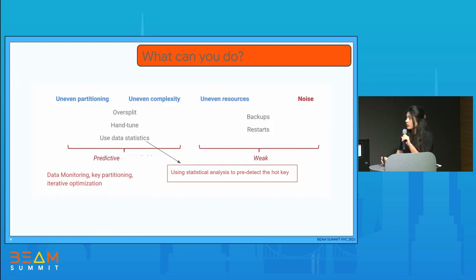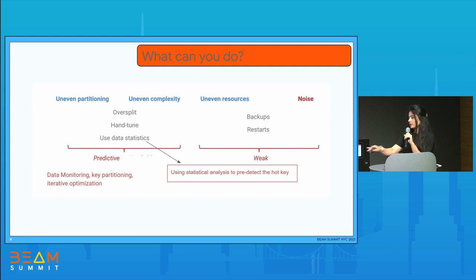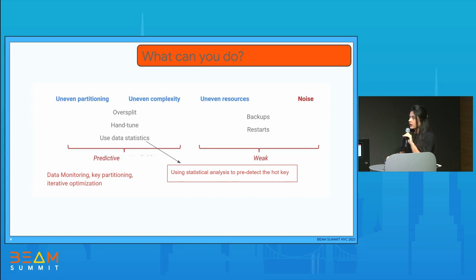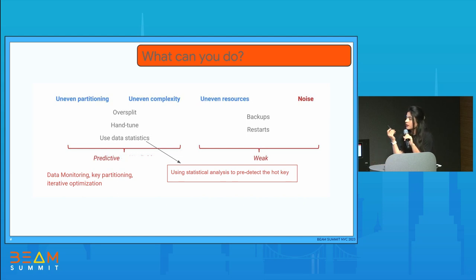There are different things you can do. The first is how to handle uneven partitioning and uneven complexity. One thing you can do is try to over-split your shards enough so there won't be a hotkey scenario. But it's a bit problematic — if you shard too much, it might introduce more complexity. It heavily depends on your domain knowledge. Over-splitting to a certain level might solve the issue, but splitting too much can result in newer problems, so take it with a grain of salt.